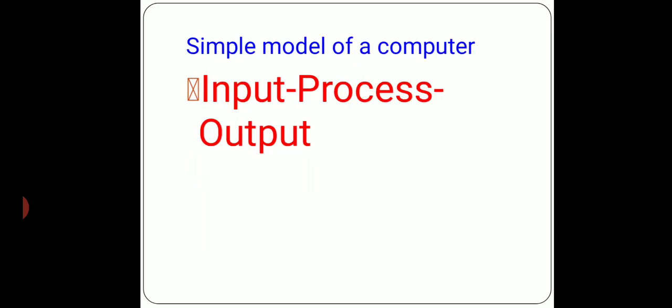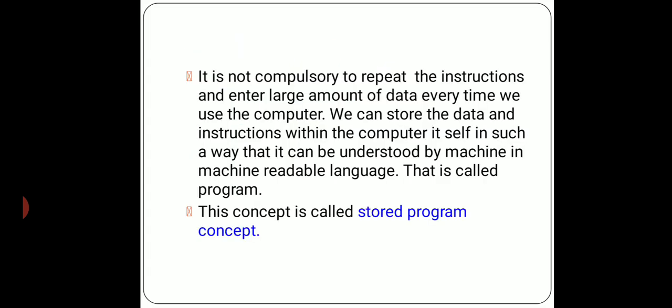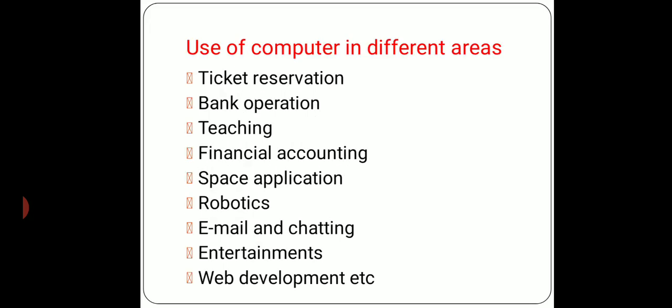Simple model of computer: the simple model of a computer is input, then process, and output. Inside the computer, instructions do not need to be repeated over and over. We can store the data and instructions within the computer — that is the concept called stored program. We don't need to apply the concept again and again; we store it inside and can use it repeatedly.